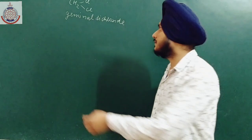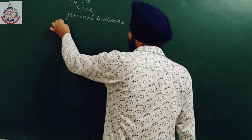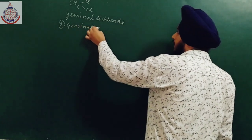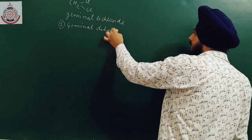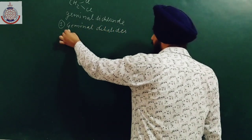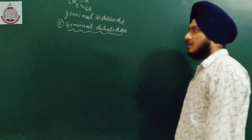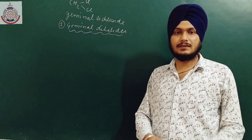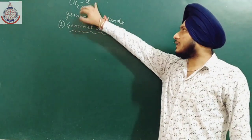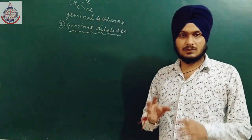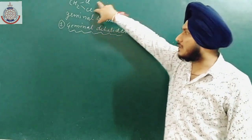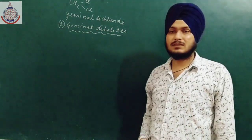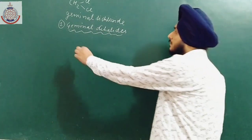What are geminal dihalides? These are compounds in which both halogen atoms are attached to the same carbon atom. For example, if we have a compound where both halogens are on the same carbon, it is known as a geminal dichloride.